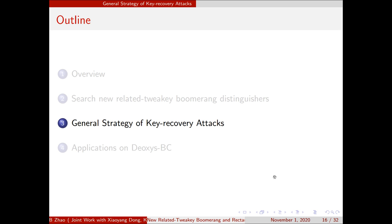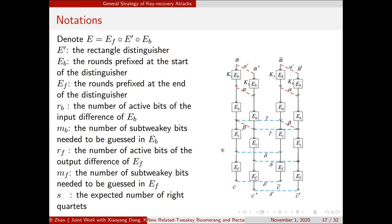And now we will introduce our general strategy of key recovery attack. Here is the notation. We denote the whole encryption algorithm by E_f, E', and E_b, where E_b is the distinguisher, and E_f and E_b is the rounds prefix at the start and end. R_b is the number of active bytes bits of the input difference of E_b, and M_b is the number of the sub-tweakey bits that need to be guessed in E_b. R_f and M_f are similar to R_b and M_b. And S is the expected number of right quartets. And then alpha, beta, gamma, and delta are the differences of the distinguisher.